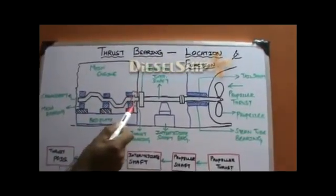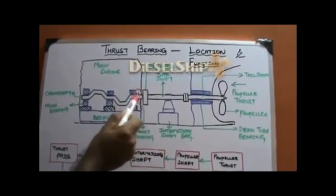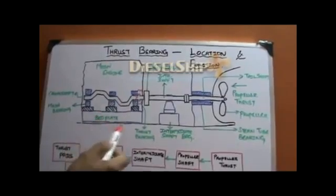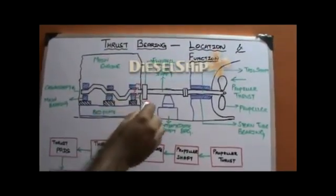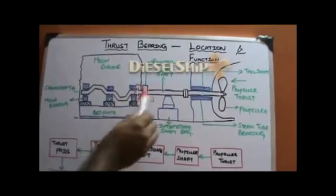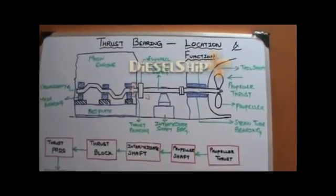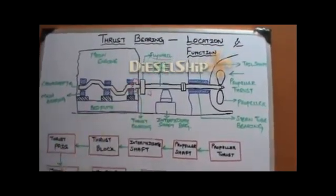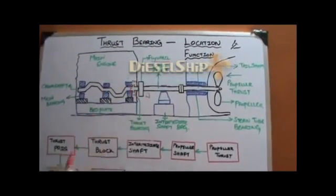The last portion of the main engine has the thrust block — it is an integral part of the main engine. About 15 to 20 years ago, the thrust block was found outside the main engine as a separate unit to absorb the propeller thrust. But the current trend is to make the thrust block an integral part of the main engine at the aft-most unit.